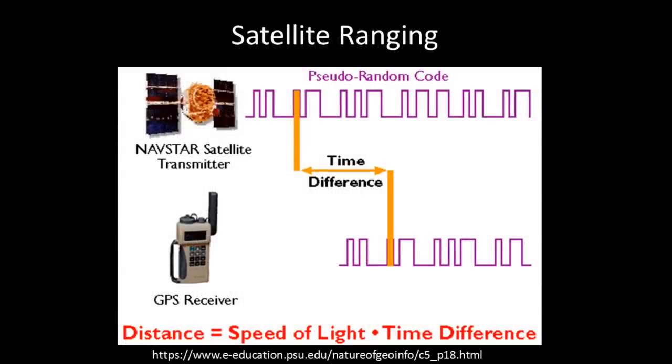GPS receivers calculate distances to the satellites as a function of the amount of time it takes for the satellite signals to reach the ground. The velocity of the radio signals, like other forms of electromagnetic radiation, is known to be the speed of light. To determine the time difference between transmission and reception, the receiver must be able to tell precisely when the signal was transmitted and when it was received. GPS satellites are equipped with extremely accurate atomic clocks, so the timing of the transmissions is always known. Receivers contain cheaper clocks.